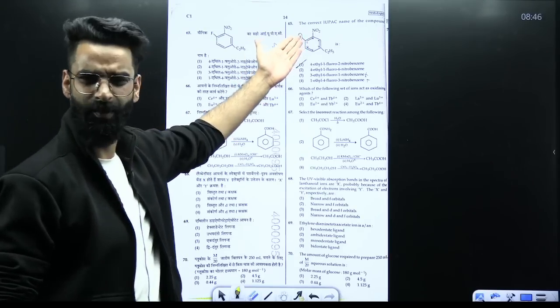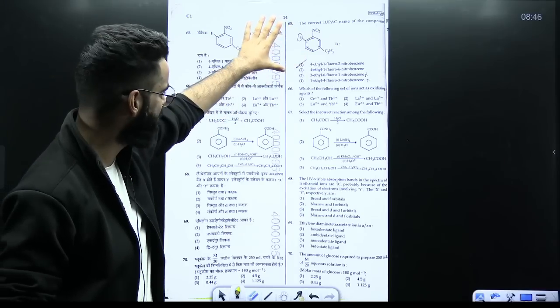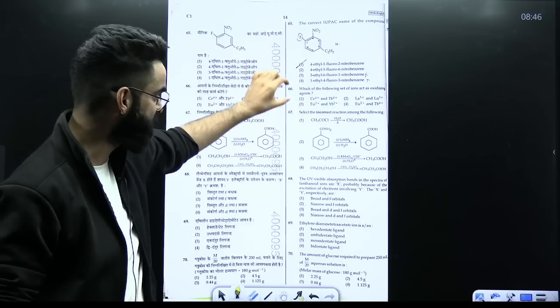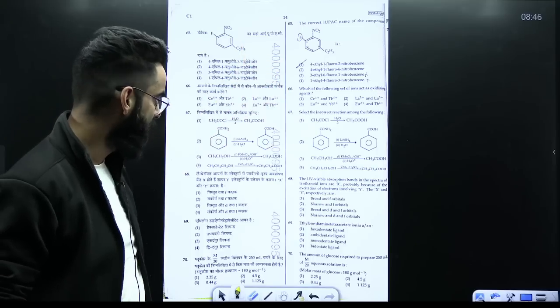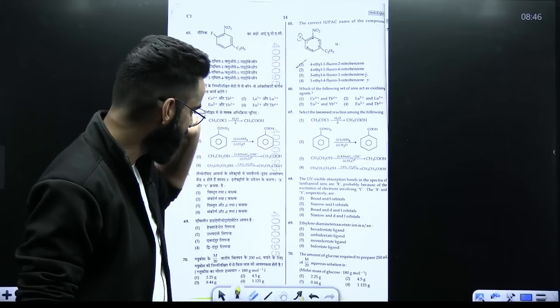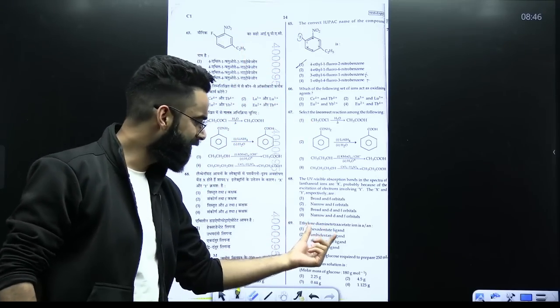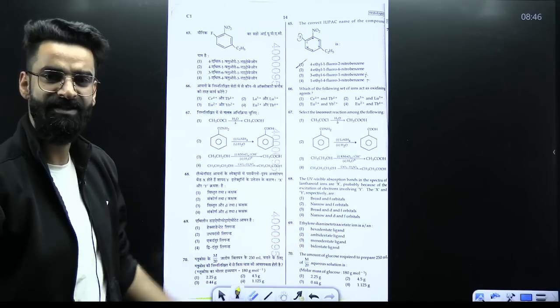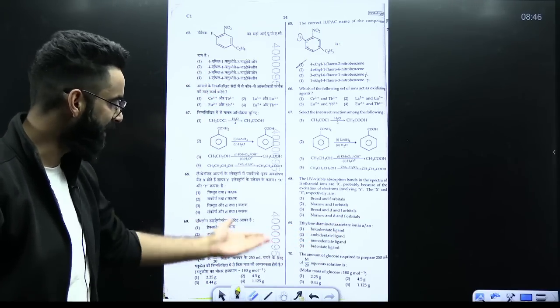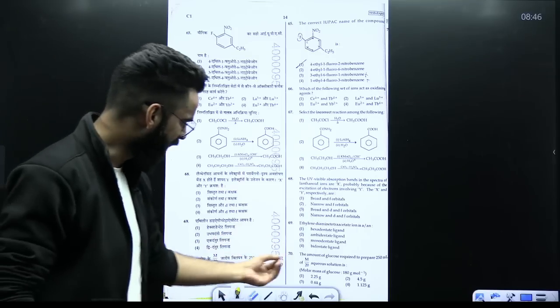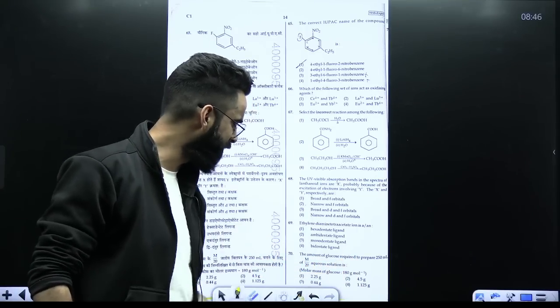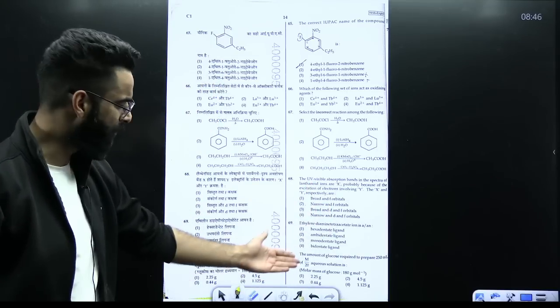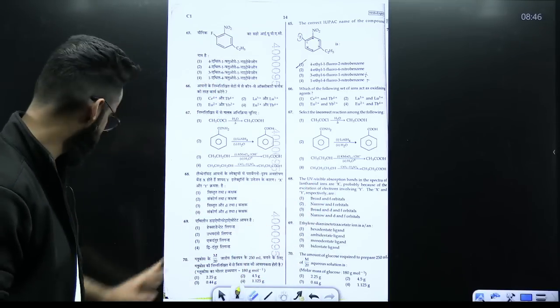IUPAC name, a basic question. You have to check the IUPAC name of this. Which is the following set of ions, oxidizing agents, from DNA block elements. You get this particular equation frequently. Similarly, convergent again, ethylene diamine tetraacetate, EDTA, it is which ligand? Hexadentate, ambidentate, I mean the basic equation. The amount of glucose required to prepare 250 ml of 1 by 20 molar solution. So mass of glucose you have to calculate, molarity is given. Again one basic simple question only.